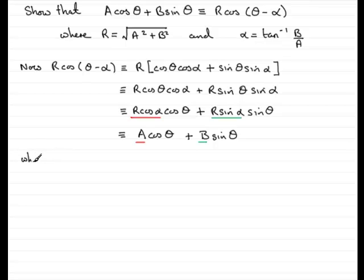We can say that R sin α equals B and we've also got R cos α is the A. And if I number these two equations, 1 and 2, I can solve them simultaneously.